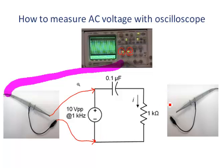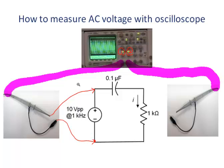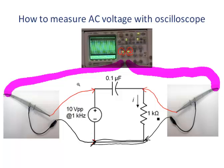The second channel is across the resistor, because we are interested in the voltage across the resistor. One of the leads of the probe — the ground lead — should be connected here. Notice that for the two channels, the ground leads should be connected together because they are internally grounded inside the scope. So after connecting in this way, we can make the measurements.